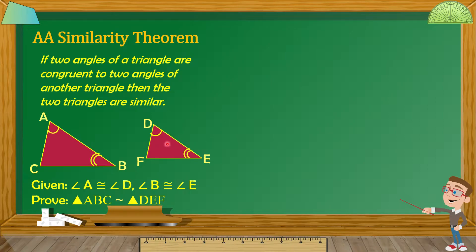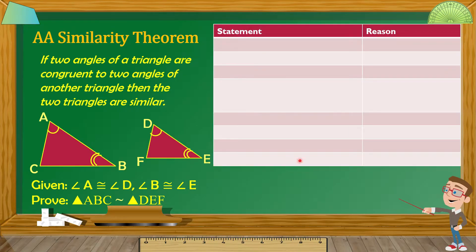Bago natin masabi na these two triangles are similar, kailangan muna nating i-prove na this statement is true. Kasi nga, theorem ito — sinabi natin doon sa previous lesson na kapag theorem yan, kailangan natin i-prove yan. Given dito na angle A is congruent to angle D and angle B is congruent to angle E, we need to prove that triangle ABC is similar to triangle DEF. Gagawa tayo ng mga statements at reason.